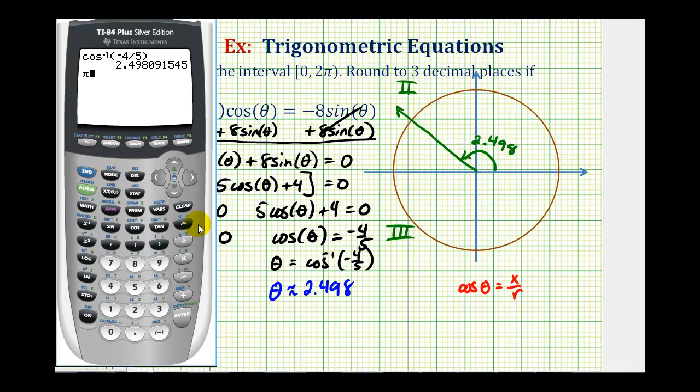Again, pi radians would be half a rotation counterclockwise. And then we'll subtract out this angle here, leaving us with this reference angle. So the reference angle is approximately 0.644 radians.